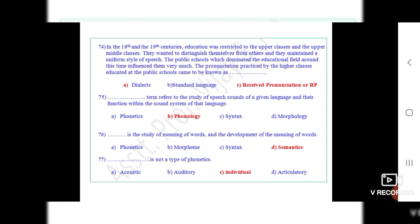Question 76: Dot dot is the study of meaning of words and the development of the meaning of words. The correct option is D, semantics.